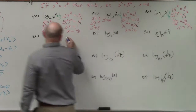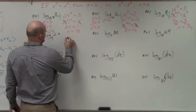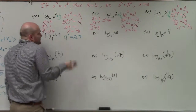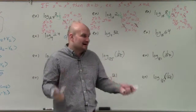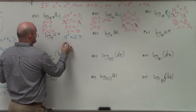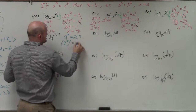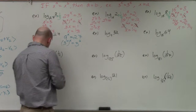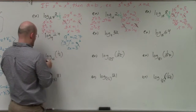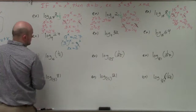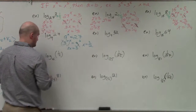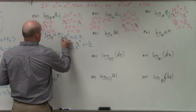Now for log base 9 of 27, I have 9 to the x equals 27. Since 9 squared is 81, that doesn't work directly. But I can rewrite: 3 squared is 9 and 3 cubed is 27. So I do 3 squared raised to the x equals 3 cubed. Using the one-to-one property, 2x equals 3, so dividing by 2, x equals three-halves.